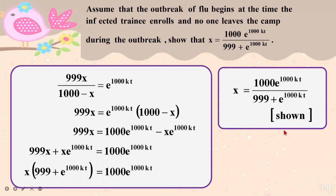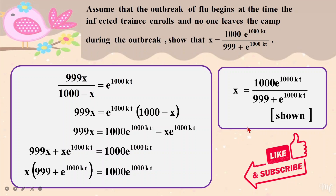I rearrange everything nicely and pull X over. This equation still has K, so I maintain K. I rearrange until I get my X — and voilà, X is found. Remember to write the word 'shown' when done. Hit like and subscribe because it is a power-up button for me and will motivate me to create more videos.